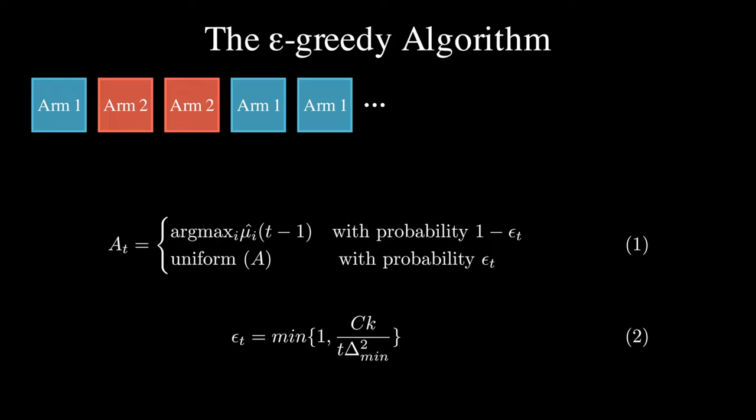Note that we need to calculate epsilon at each round. Epsilon is a function of C, K, T, and delta. C is a constant number. K is the number of arms. T is the number of the current round. Delta mean is the minimum of mean rewards difference among arms. In our example with two arms, this delta mean is simply the difference of the mean rewards between our two arms.